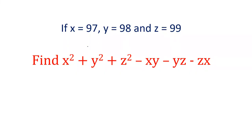Hello friends, welcome to our YouTube channel SSC Selector. In today's video, we're going to learn how to find out the value of x² + y² + z² - xy - yz - zx. The values of x, y and z are given as 97, 98 and 99. Let us see how we can solve this question.